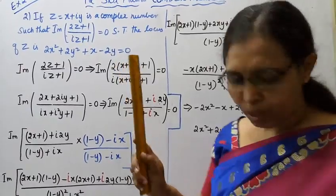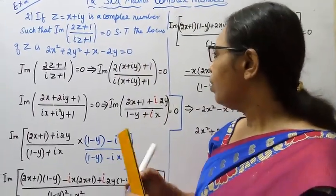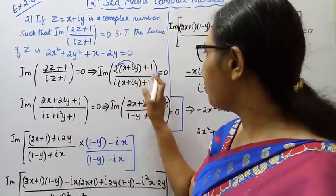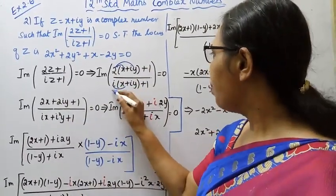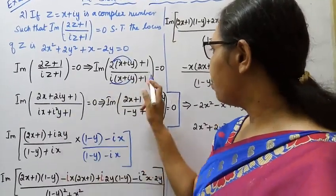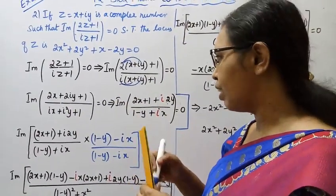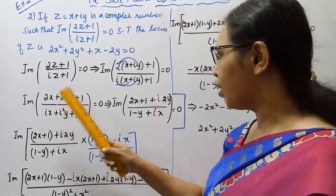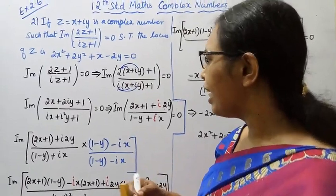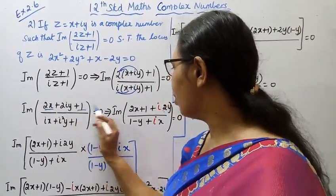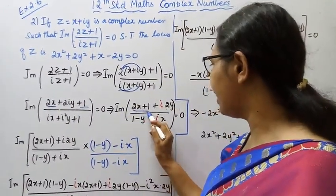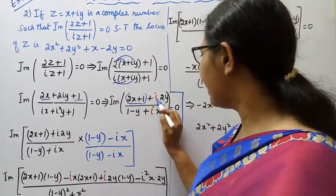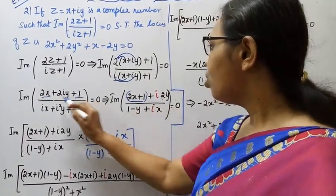That implies imaginary of 2x plus 2iy plus 1 over ix plus i squared y plus 1 equal to 0. Simplifying: numerator is (2x plus 1) plus i(2y), and the denominator — since i squared equals minus 1 — becomes (1 minus y) plus ix.